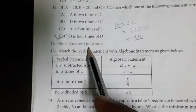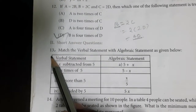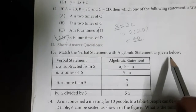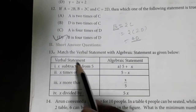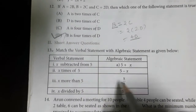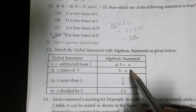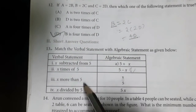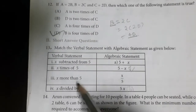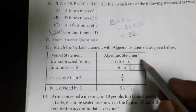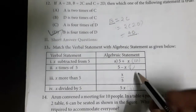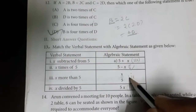Question 13 (Short Answer): Match the verbal statement with the algebraic statement. 'x subtracted from 5' → 5 minus x. 'x times y' → xy. 'x more than 5' → 5 plus x. 'x divided by 5' → x/5.